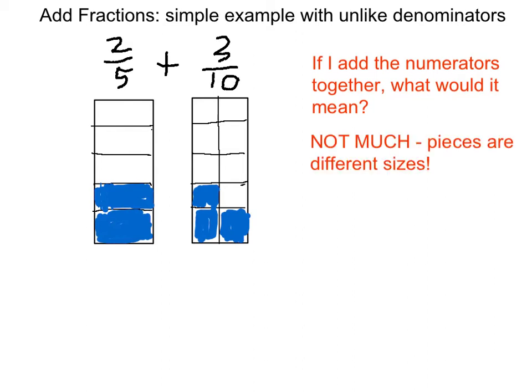So if we can't just add denominators, what do we do? The answer is, we're going to need pieces that are the same size. So what I'm going to do is I'm going to chop this in half, and now you'll see I've broken up the one on the left into 10 pieces as well.